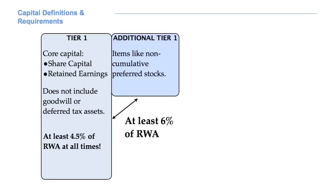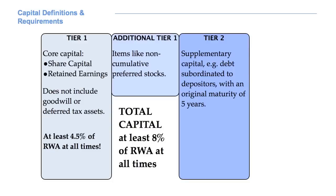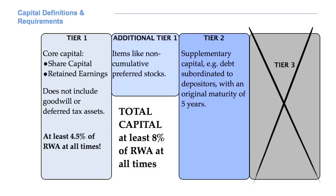Then, we have Tier 2 capital, which contains supplementary capital — for example, debt subordinated to depositors with an original maturity of 5 years. Tier 1 and 2 together must be at least 8% of risk-weighted assets. In Basel 3, there is no longer a Tier 3 capital, as in Basel 2. This is why we have not introduced Tier Capitals until now — it is better to use the Basel 3 definition.